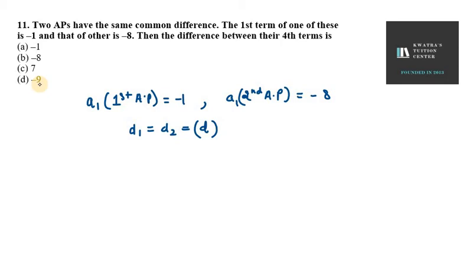Now we need to find the difference between their fourth term. So I will take A4 of first AP then subtract A4 of second AP. Now A4 we know can be written using the AN formula: AN equals A plus (N minus 1)D. A4 here will be A. A is the fourth term.